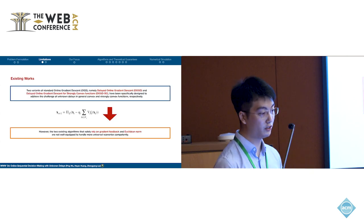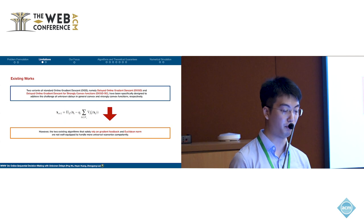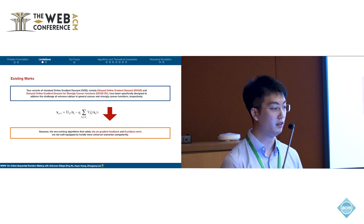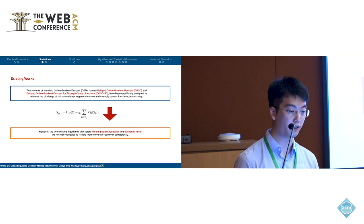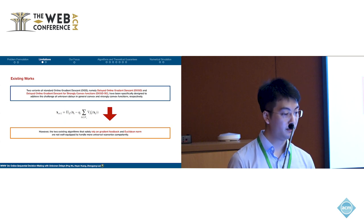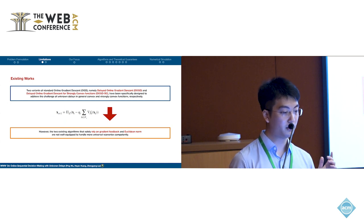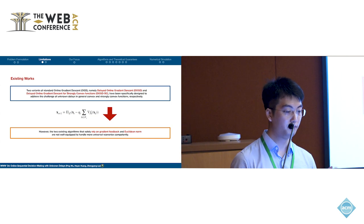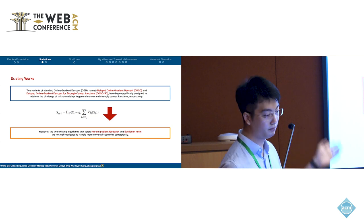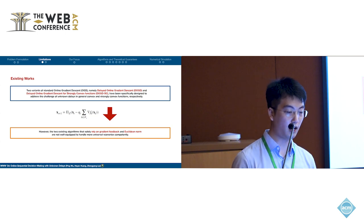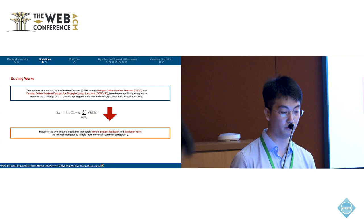There are two existing works that handle delayed feedback: delayed online gradient descent, and delayed online gradient descent for strongly convex functions. These algorithms update the decision by subtracting from the current decision X sub T using the received outdated gradient, as shown in the slides. However, the existing algorithms solely rely on gradient feedback and the Euclidean norm, and are not well equipped for more universal scenarios.